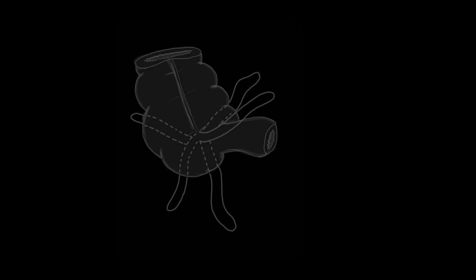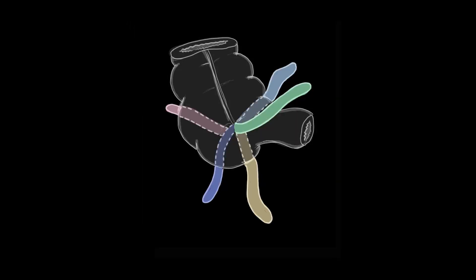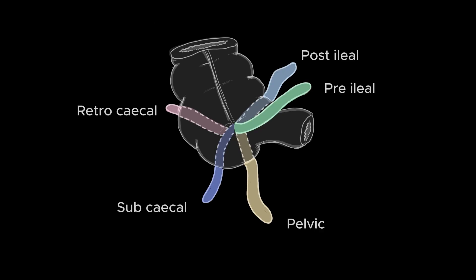The tip of the appendix can be variable in its location, which makes it even more challenging to find. Possible locations include post-ileal, pre-ileal, pelvic, subcecal, and retrocecal. The most common location is retrocecal, which is also the hardest to find on ultrasound.